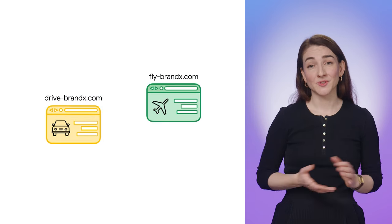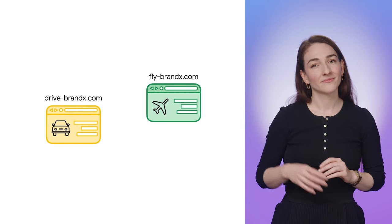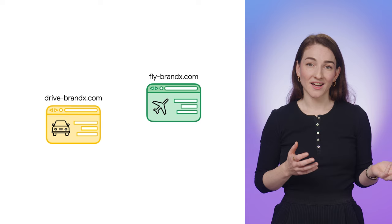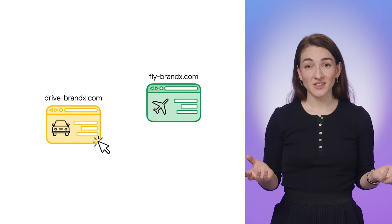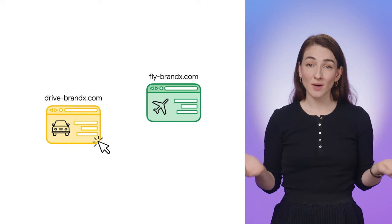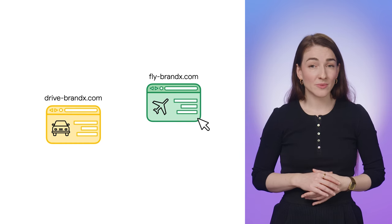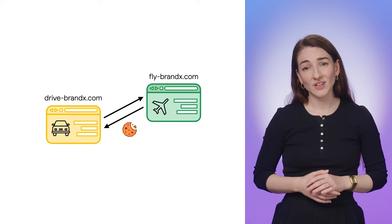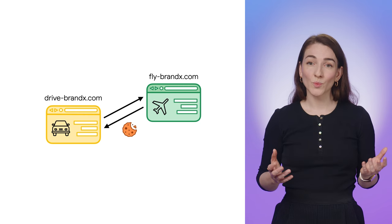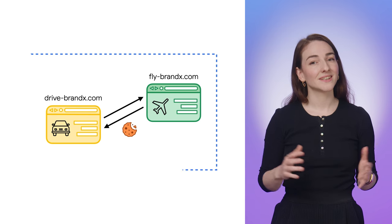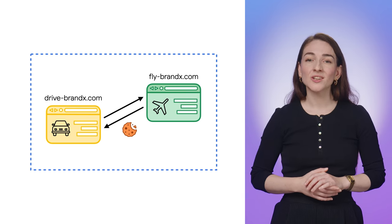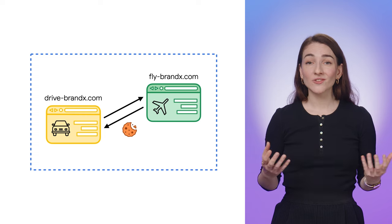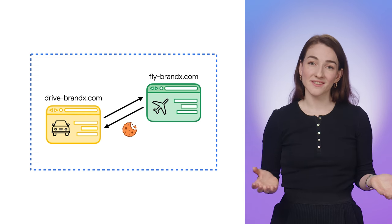Imagine a company that helps you book a vacation. The company has two related sites, flybrandx.com and drivebrandx.com, to separate flights and car hire. Over the course of booking one journey, you can go between these sites to select different options, and you'd expect your shopping cart to remember your choices across these sites. Related sites like these often rely on cookies to keep users signed in or show personalized content. As Chrome moves towards blocking third-party cookies to improve privacy on the web, related website sets can enable use cases when an organization needs a form of shared identity across different top-level sites.